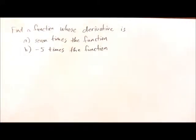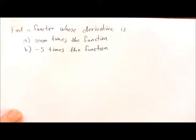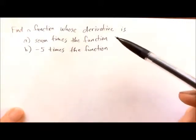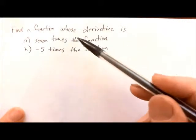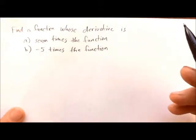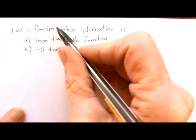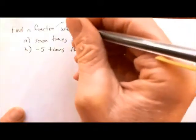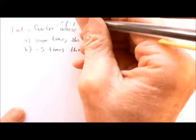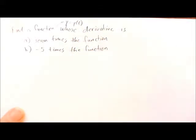Let's take a look at a question that, at first glance, just looks like a silly little mental exercise, but this kind of question will be very important in this course. The question is, let's look at part A first. We want to find a function — let's call it y equals y of t — whose derivative is 7 times the function itself.